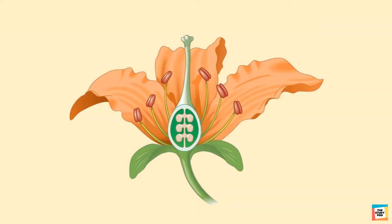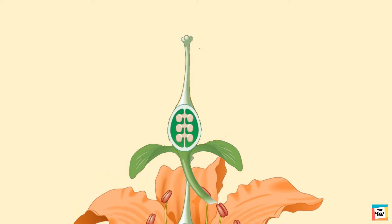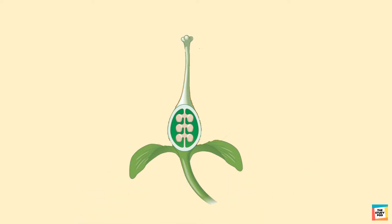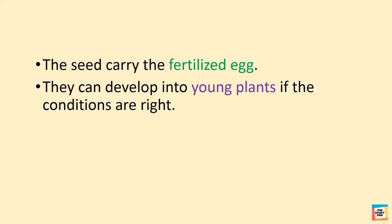After fertilization, the sepal, petals and stamen of the flower will wither and drop off. The ovary develops into fruit, while the ovules inside the ovary develop into seeds. The seeds carry the fertilized egg.